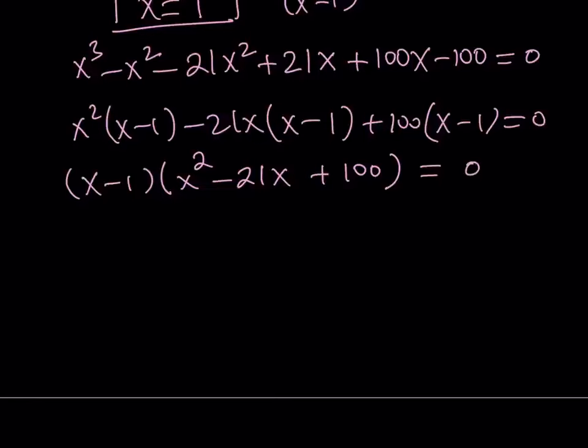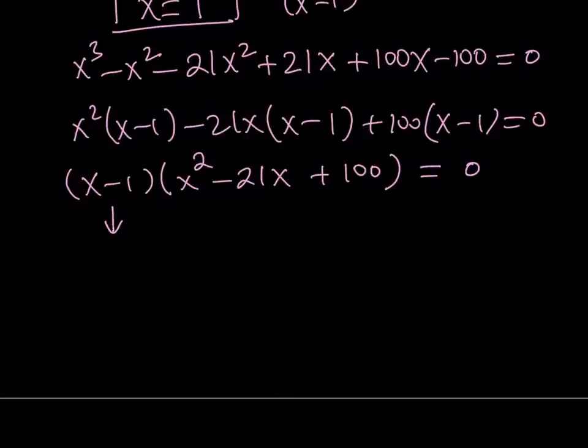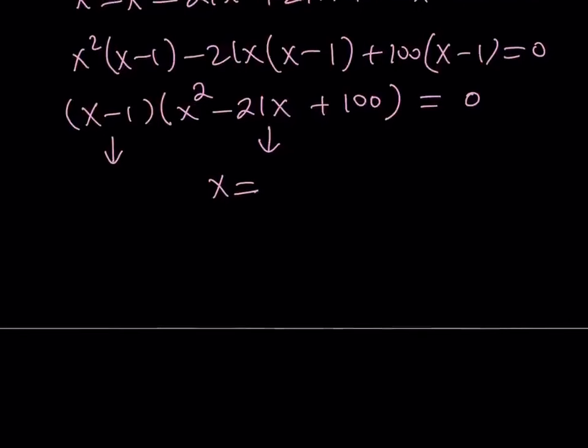So obviously, we already talked about it. x = 1. We know that. That's a possible solution. But let's go ahead and solve the quadratic. If you use a quadratic formula, that would be fairly easy. You're going to get two solutions, and they are going to be real because 21 squared is greater than 4 times 100. So they're going to be like (21 ± √41) / 2. So we get three solutions for the cubic.